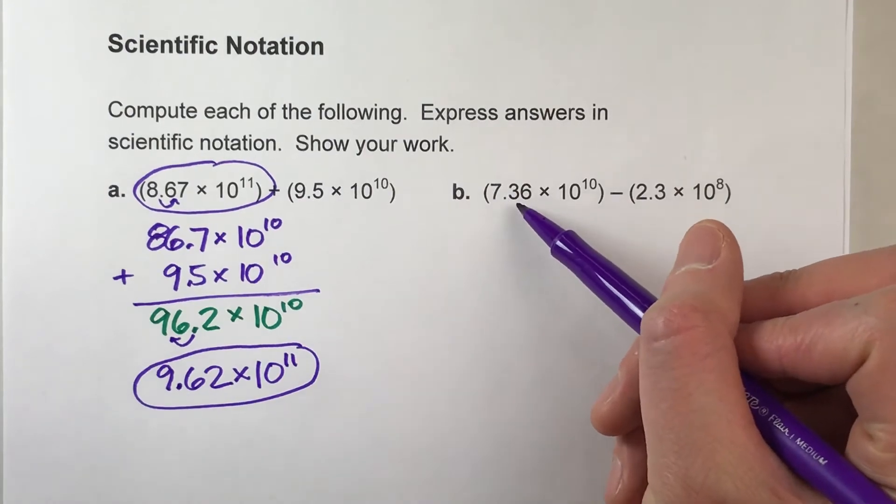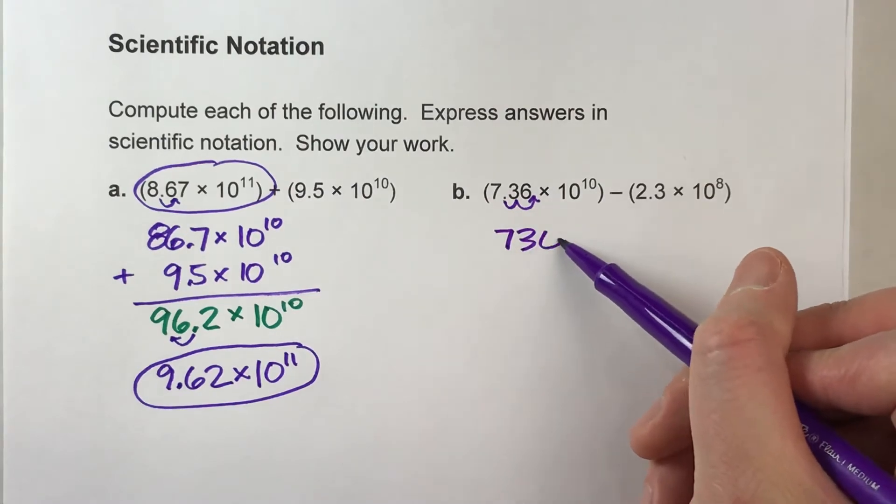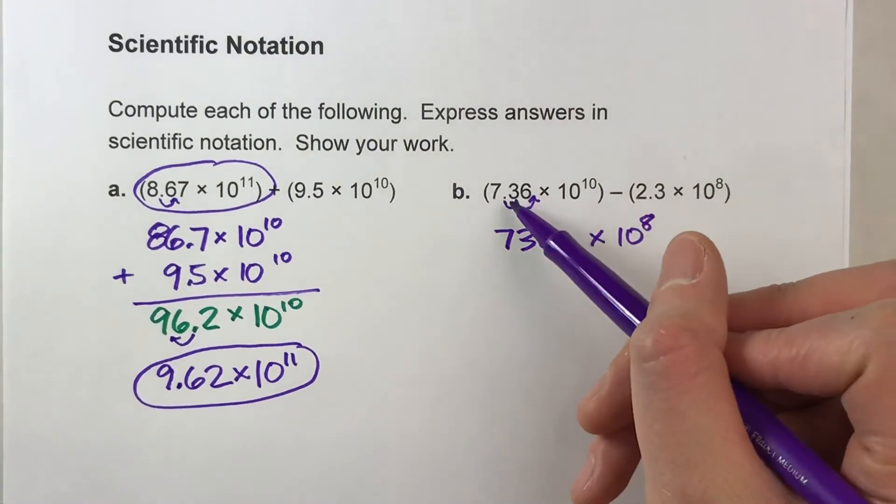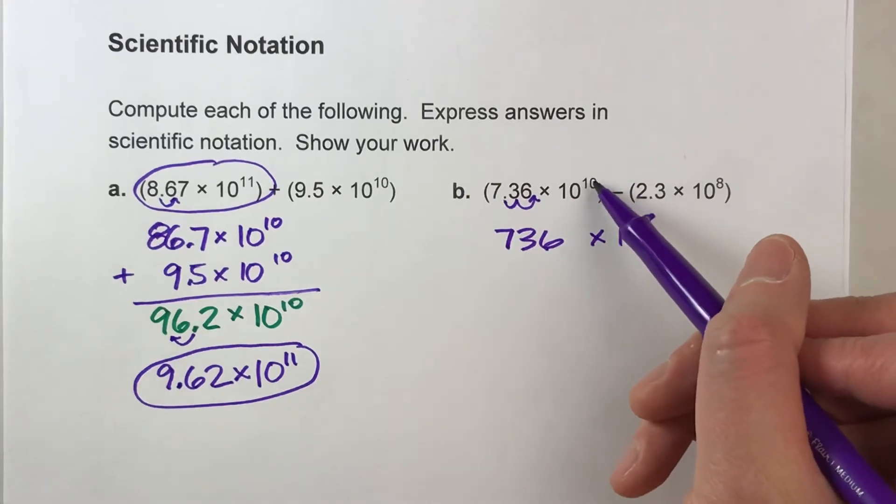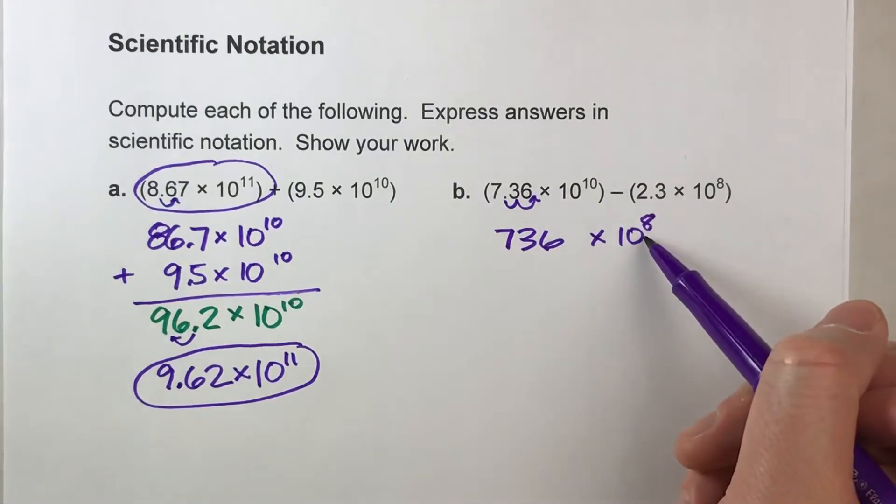Tell you what, I'm going to change this one to the 8th power. I'm going to move this decimal over two places to make this 736 times 10 to the 8th power. Because I've moved it over two places, I only have eight more steps left to move it. So I'm going from 10 to 8.